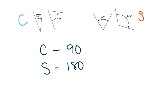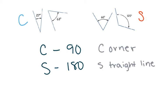Since C comes first, it goes with 90. Since S comes next, it goes with 180. Another way you can remember: if you think about a corner in your house or classroom, that corner makes 90 degrees. So you can think about C starting with a corner, and that goes with complementary. Or if you think about a straight line, a straight line makes 180 degrees, so you can think about that S with the straight line going with supplementary.